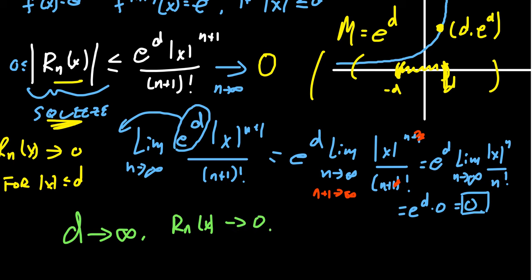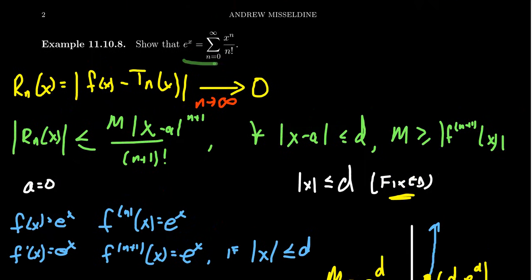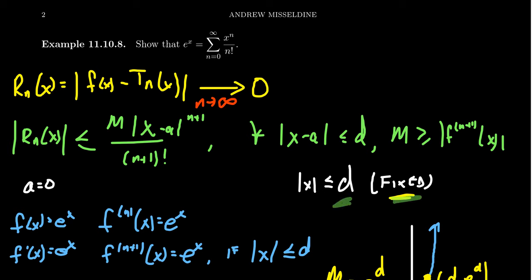Therefore that gives us the proof that e to the x is equal to its Maclaurin series. For example, when x equals 2 we set d equal to 2 and the limit goes to zero, so e squared equals the series. For e to the 12th we set d equal to 12 and get the same result. Doing this for every value of x — and we can do all of them simultaneously — shows that e to the x equals its Maclaurin series.